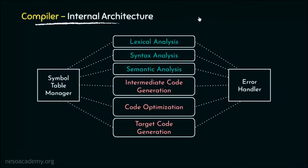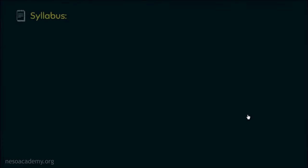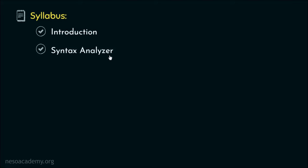In a nutshell, this is exactly the compiler design course. Now if we talk about the course plan — that is the syllabus — it is as follows. Chapter 1 will be the introduction, where we will cover the symbol table and the lexical analyzer. Chapter 2 will be the syntax analyzer, where we will get to know about different classifications of context-free grammars. Next up is the top-down parsers, where we will mainly focus on the recursive descent and LL1 parsers. Also, while covering LL1 parsers, we will learn about first and follow.